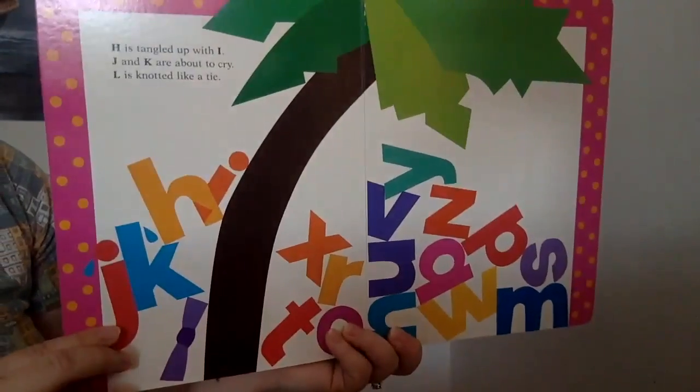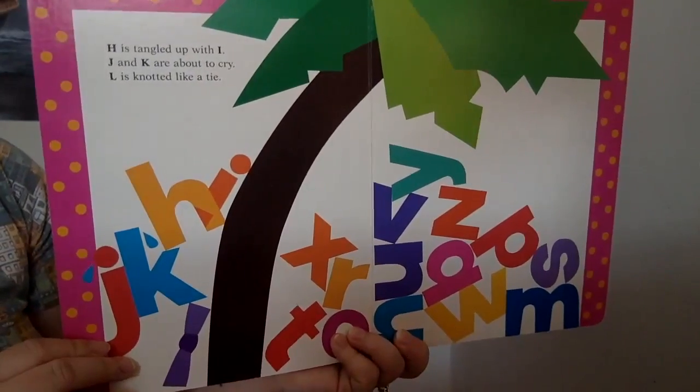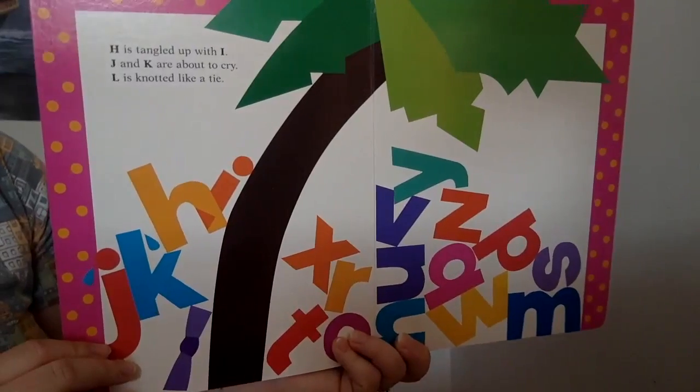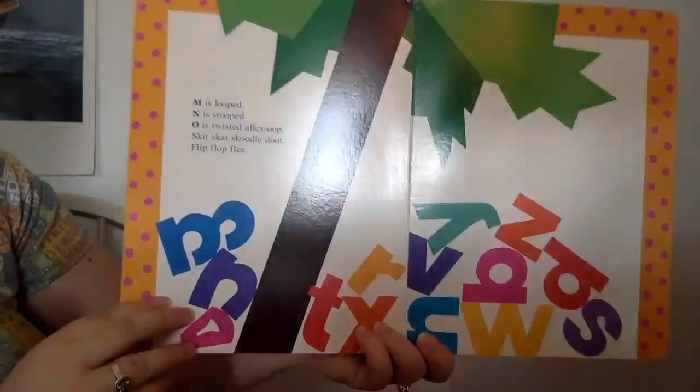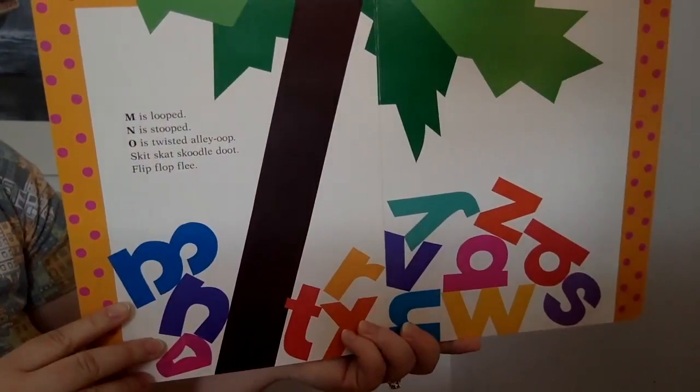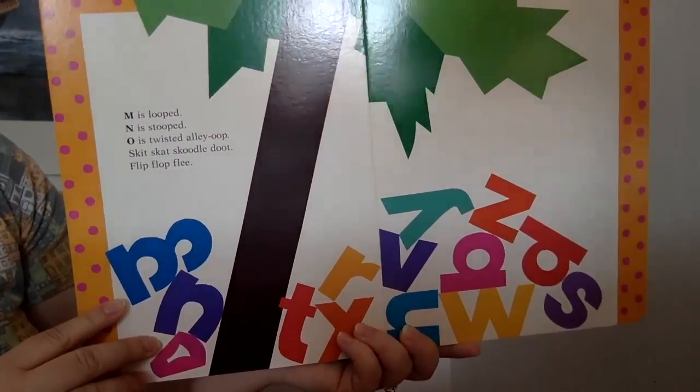H is tangled up with I. J and K are about to cry. L is knotted like a tie. M is looped, N is stooped, O is twisted, alley-oop.